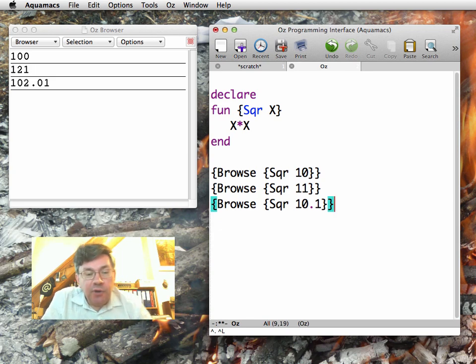This lets me introduce two kinds of numbers in Oz: the exact numbers, which are integers, and the approximate numbers, which are called floating-point numbers, which approximate real numbers. These two sets of numbers in Oz are completely separate, and there's no mixing between the two, no automatic conversion.